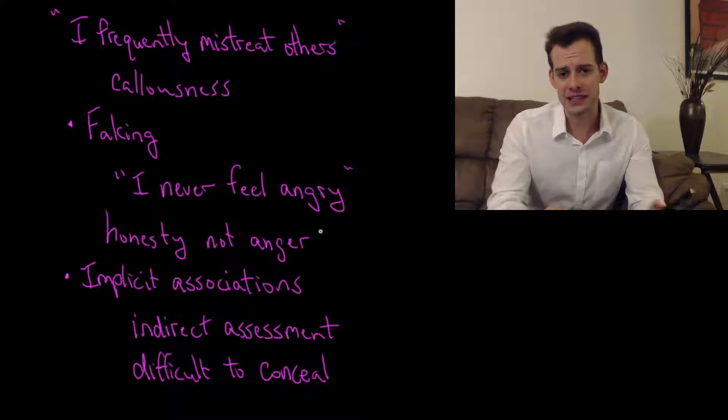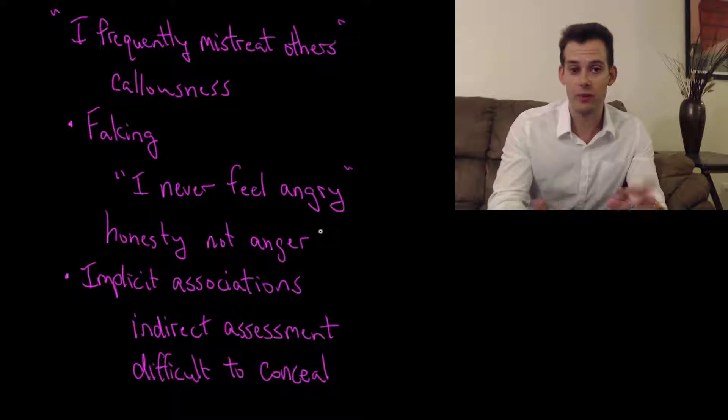So these are generally things that are going to be difficult for the participant to conceal even if they want to. If these things are difficult to conceal then people don't know how to hide them. So we might measure things like their blinking rate. Or if you're familiar with the polygraph, it measures the galvanic skin response, and that's something that people can't fake very easily.